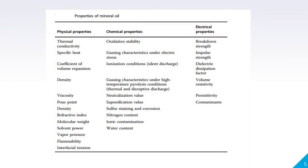The properties of mineral oil can be classified into three basic categories: physical, chemical, and electrical. Electrical properties include breakdown strength, impulse strength, dielectric dissipation factor, volume resistivity, and permittivity. Chemical properties include oxidation stability, gaseous characteristics under electrical stress, and ionization conditions. Physical properties include thermal conductivity, specific heat, coefficient of volume expansion, density, viscosity, pour point, refractive index, and molecular weight.